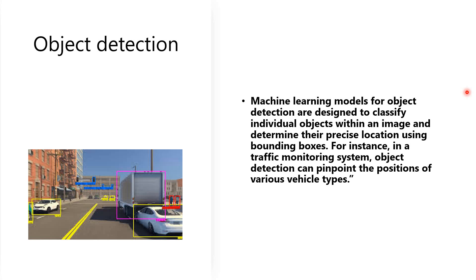The next one is object detection. Machine learning models for object detection are designed to classify individual objects within an image and determine their precise location using proper bounding boxes. For instance, in a traffic monitoring system, object detection can pinpoint the positions of various vehicle types.